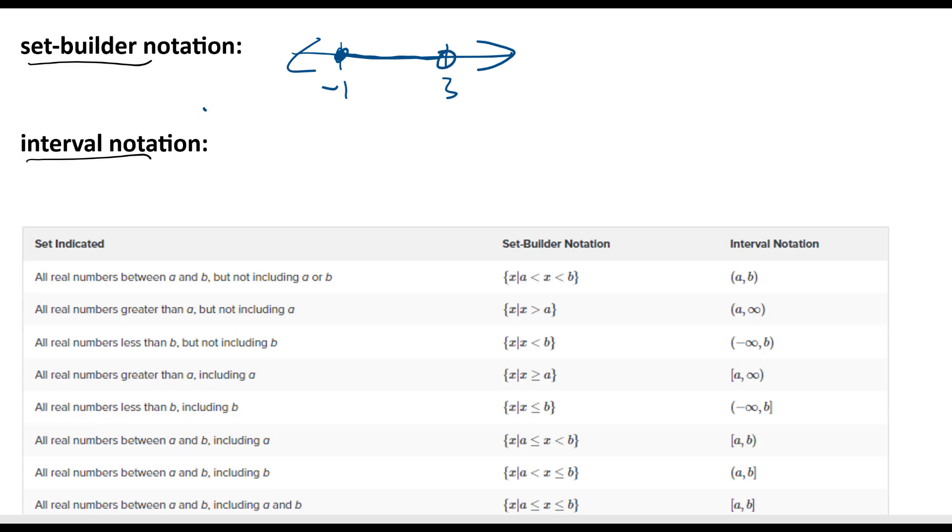So set-builder notation would be like this. We use these braces, you find them on the keyboard next to the P button. And you do, it depends on the variable you're working with, you could say x, then you do a vertical line. The vertical line means 'such that' - x such that - and then you give the conditions for x.